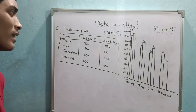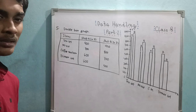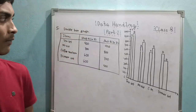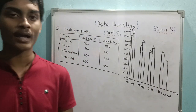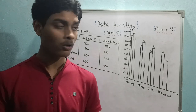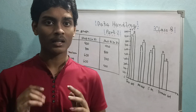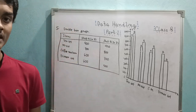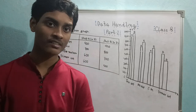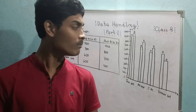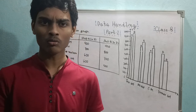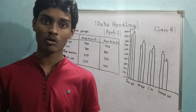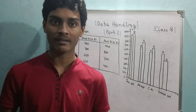That's it from data handling part 2 — an expansion of part 1. If you found bar graphs, double bar graphs, and frequency distribution tables clear and helpful, please like, share, and subscribe — it motivates me to make better videos. Get ready for the pie charts video coming in the next class 8 session in two days. Take care and goodbye — New Year is coming soon, so be ready to welcome it with your beautiful plans!